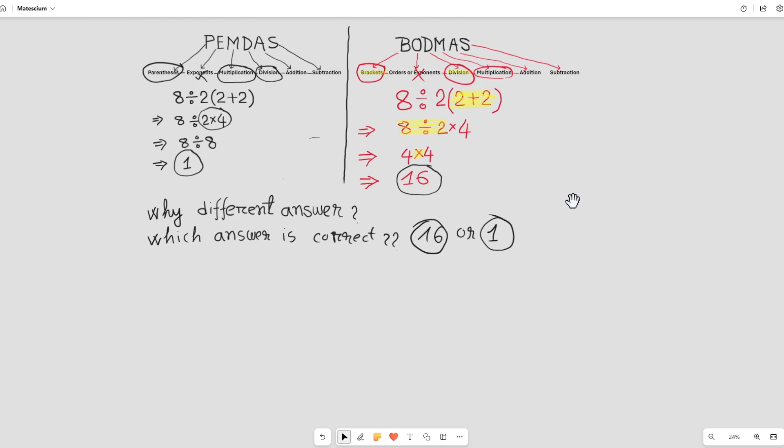PEMDAS and BODMAS are acronyms used to remember the order of operations in mathematics. They help to ensure that mathematical expressions are evaluated consistently and accurately.